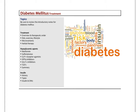This is the first lecture on diabetes treatment. Be sure, if you haven't already, to review the lectures on diabetes — the definitions, types, complications, and assessment and general overview of treatment. In this lecture, I'll talk about the treatment looking at the therapeutic order, focusing specifically on diet, exercise, lifestyle recommendations, micronutrient therapy, and herbal therapy. In the following videos, we'll look at the hypoglycemic agents and insulin therapy.